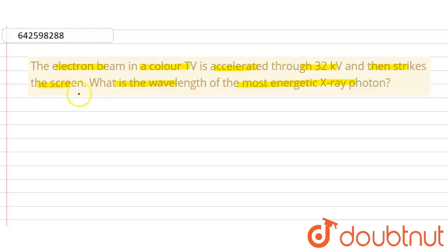In this question, it is given that here the potential of electron beam, V equals 32 kilovolt. Convert into volts, that is 32 × 10³ V. And this potential is equal to the energy, so energy E equals 32 × 10³ electron volt.